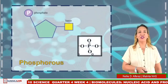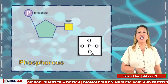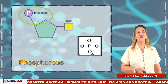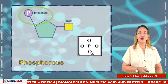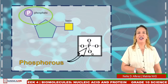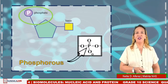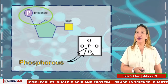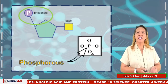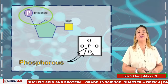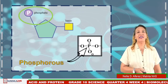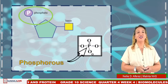The next important group in studying nucleotides is the phosphate group. It consists of phosphorus at the center, to which oxygen atoms are attached. The phosphate group is a polar molecule due to the presence of highly ionized oxygen atoms, which impart a negative charge to the phosphate. The third group in a nucleotide is the nitrogenous base.